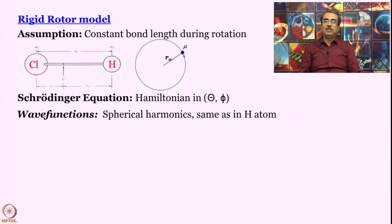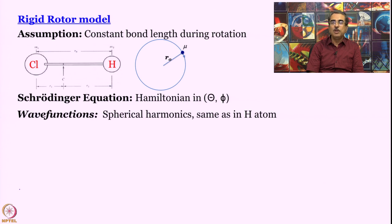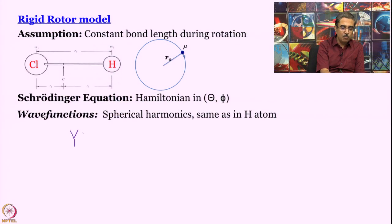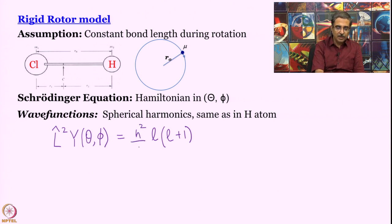So what we will do now is see what the solutions are. Since the Schrödinger equation is similar to that of the angular part of the hydrogen atom, the wave functions are also the same as in the hydrogen atom — spherical harmonics. Since we know the wave functions are spherical harmonics Y(θ,φ), and they are eigenfunctions of the L² operator with eigenvalue L(L+1) multiplied by ℏ² — that is, h²/4π² — the difference from the hydrogen atom here is that R is constant.